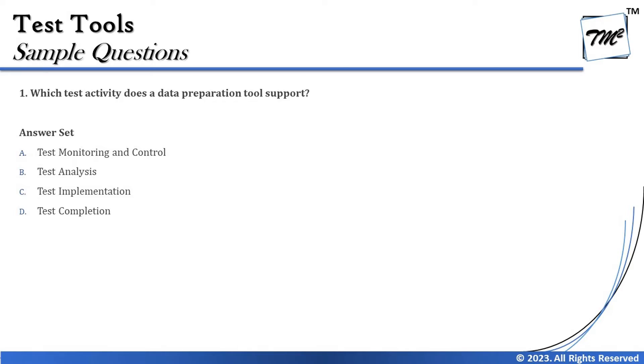We need to correlate back to the test process from Chapter 1 and identify the phase where test data preparation happens. The test design phase is where we identify the test data required for executions, and the test implementation phase is where we actually prepare the data. This makes it clear which phase the test data preparation tool supports.